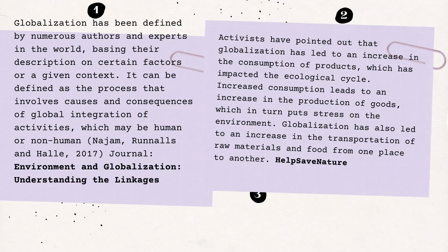Here I have two example sources: one is 'Environment and Globalization,' an electronic copy of a book with three authors, and the other is from Help Save Nature. My goal is to prove that while globalization is helping us move forward economically, it has taken a blow on our environmental aspect. My challenge is to combine the two while citing my sources, using connecting words like 'however,' 'furthermore,' 'in contrast,' and 'in addition to.' Remember that in paragraph writing, unity, coherence, and proportion are key qualities.